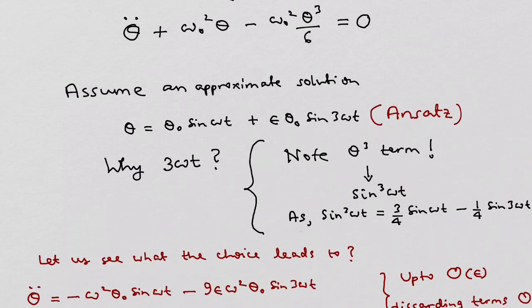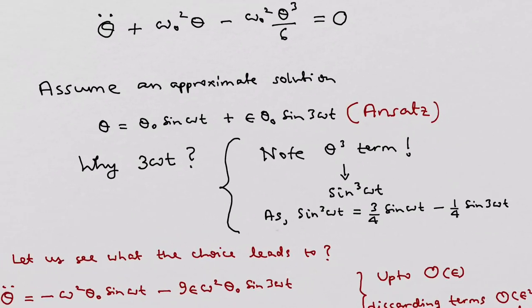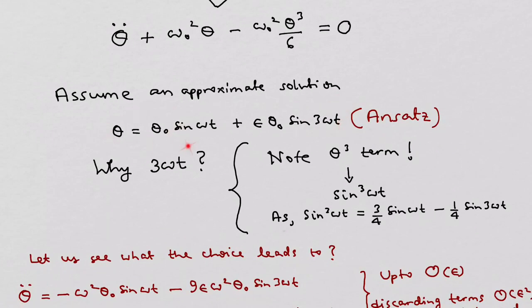Now as we know, sin³ωt = 3/4 sin ωt - 1/4 sin 3ωt. So in order to account for the sin 3ωt term we need to have the sin 3ωt within the ansatz as shown here.